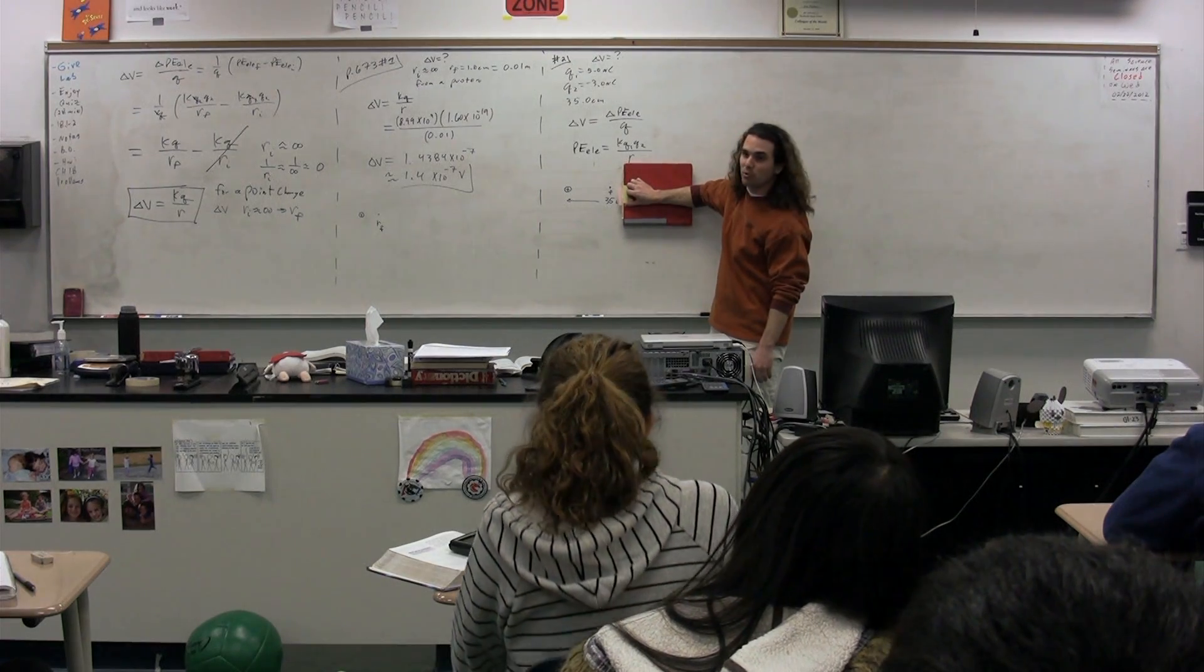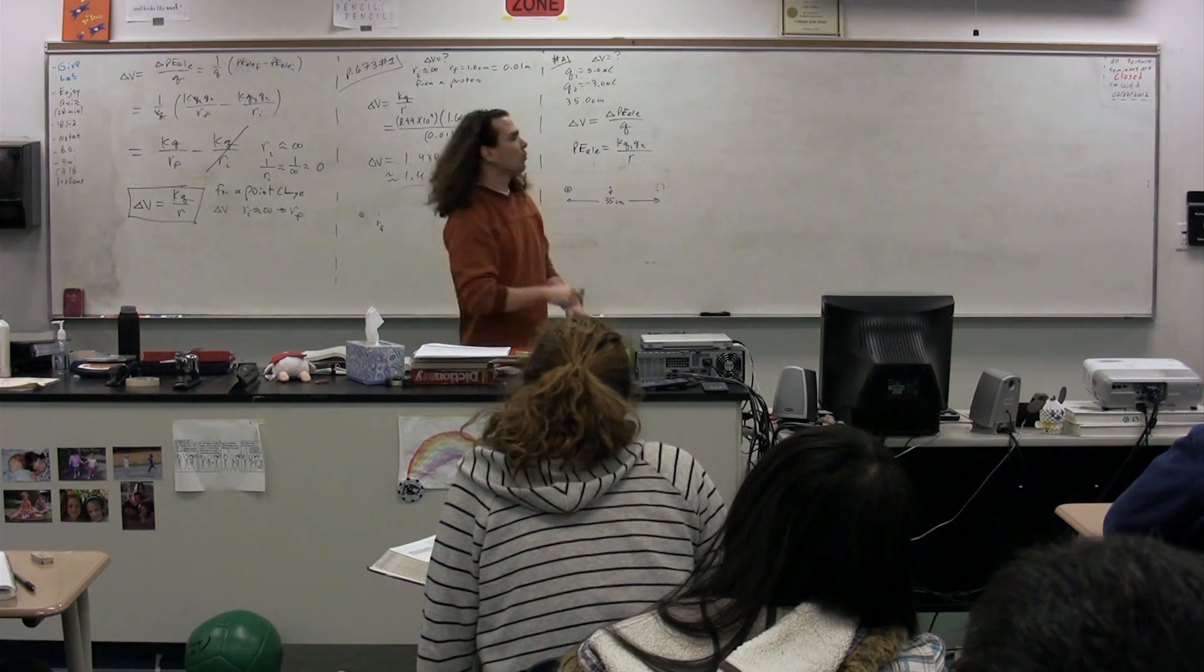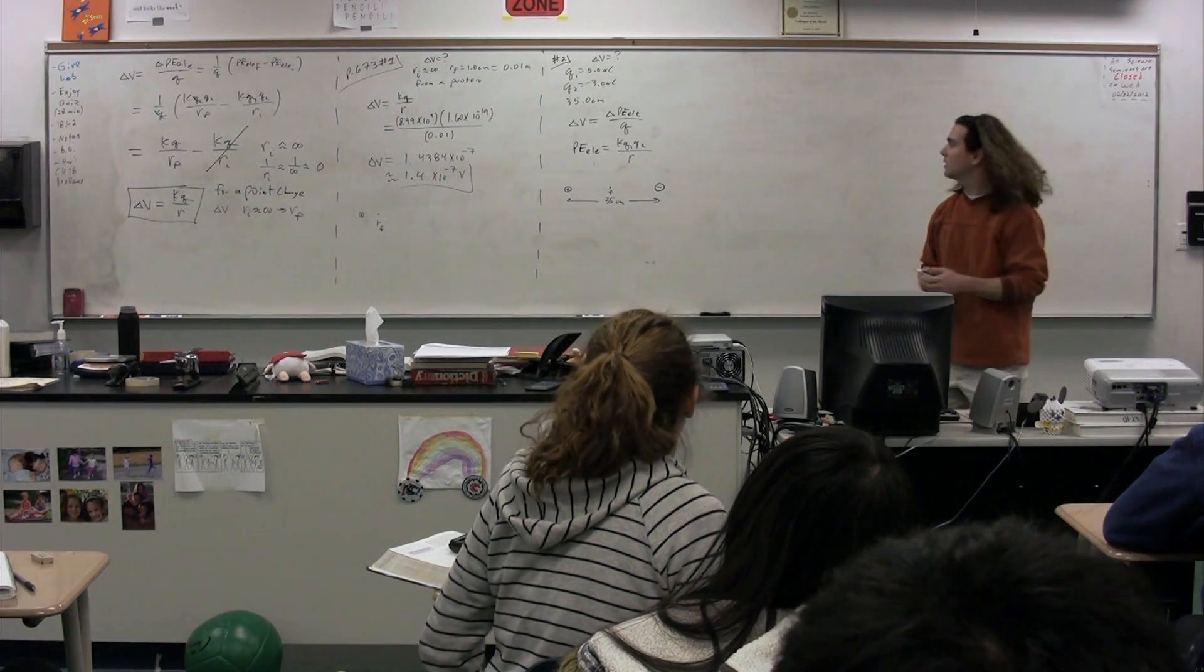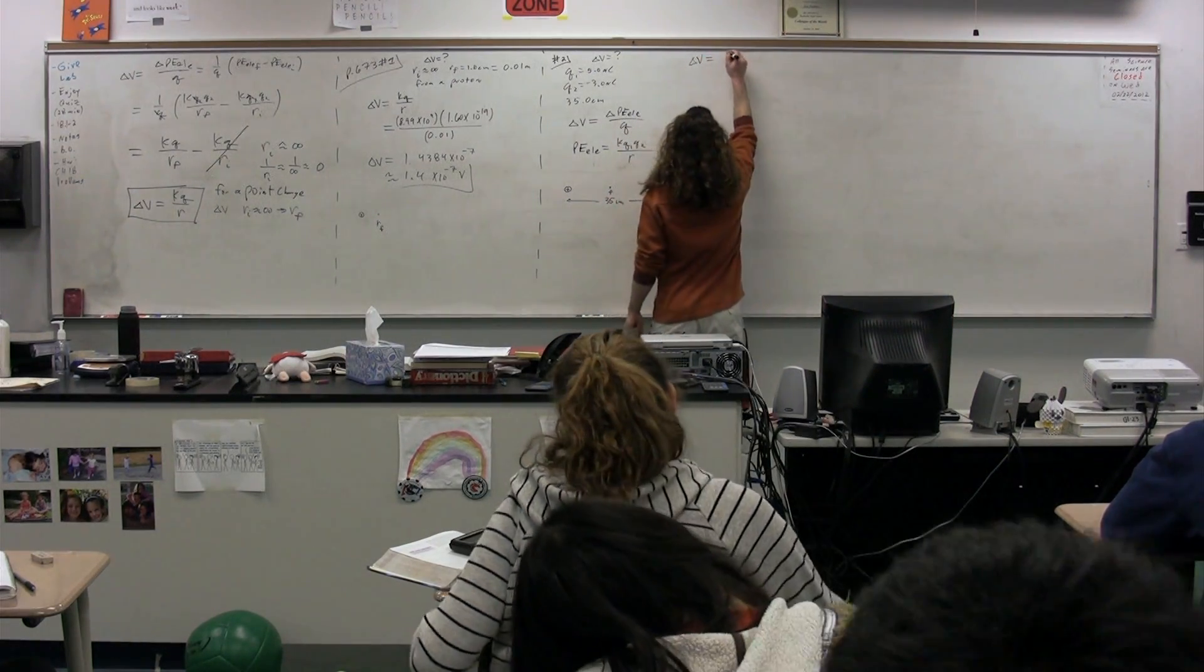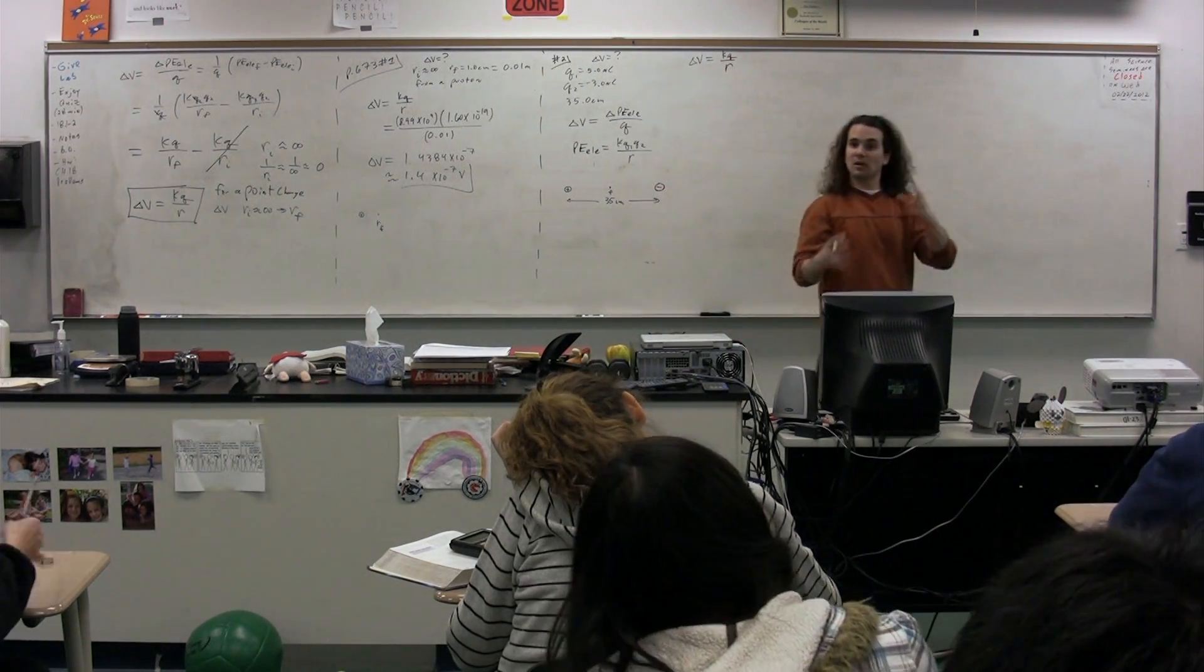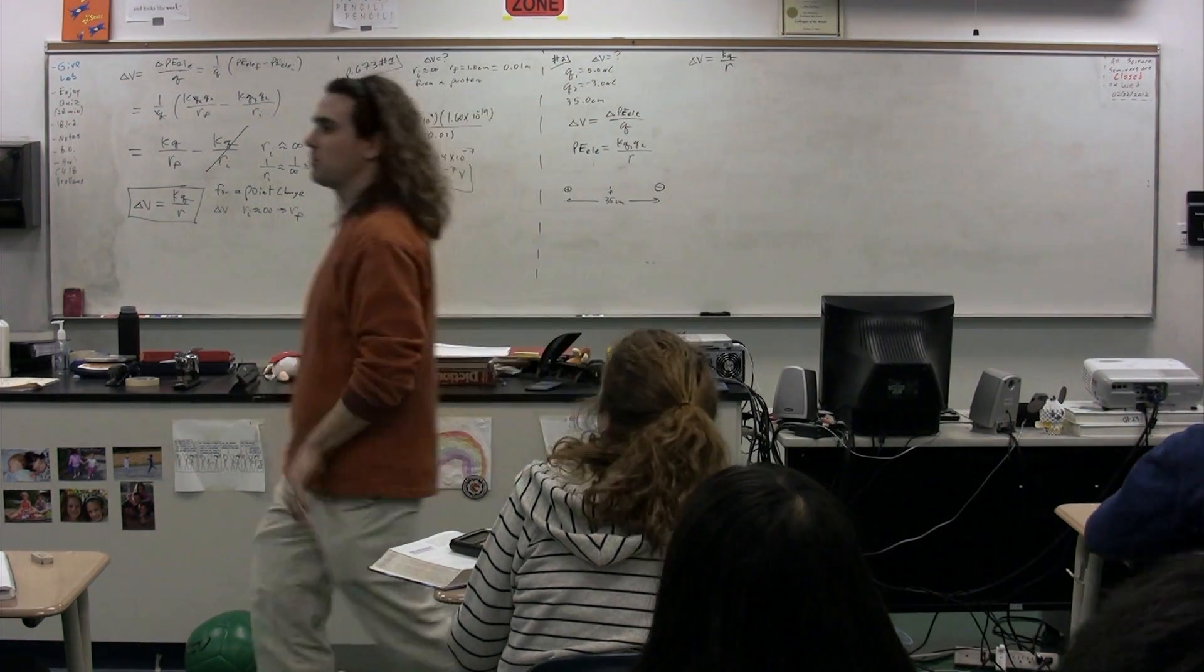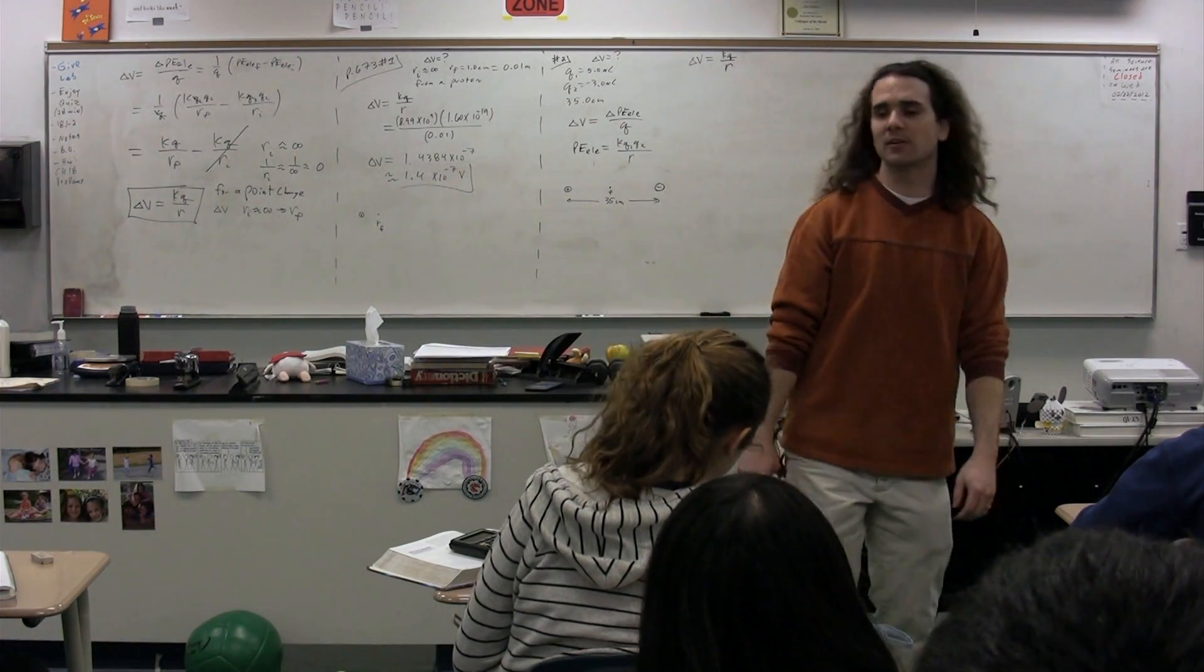It's just instead of having one point charge, we have two. So what equation are we going to use to solve this problem? It would just be the electric potential difference equals kQ over r. But the issue is we don't know how to use this with two charges. That's where people get confused. So remind me, class, is the electric potential difference a vector or a scalar? Scalar.